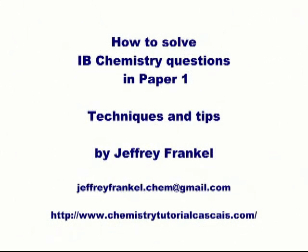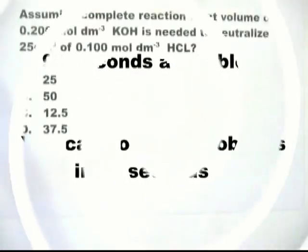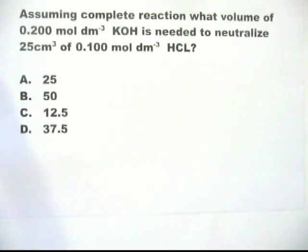In this third part of my series, How to Solve IB Chemistry Questions in Paper 1, I continue to give you tips and techniques to help you deal with moles and concentration questions successfully and within the time available. You are asked to determine the volume of potassium hydroxide used when titrating against a given strength and volume of hydrochloric acid.